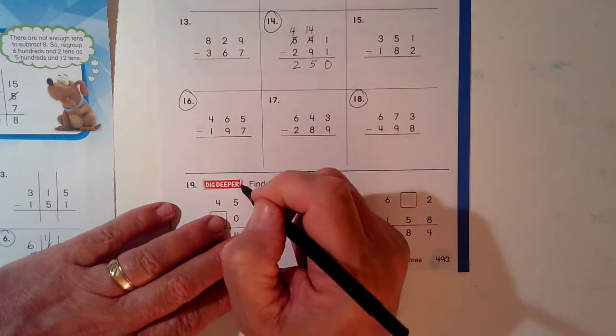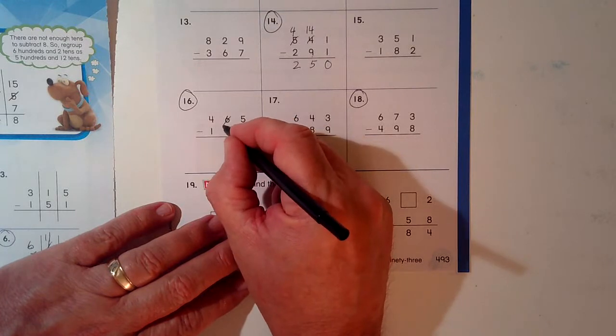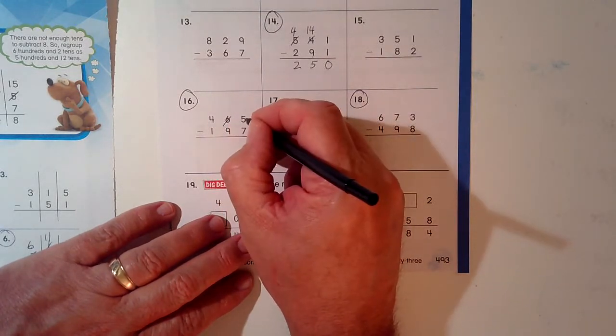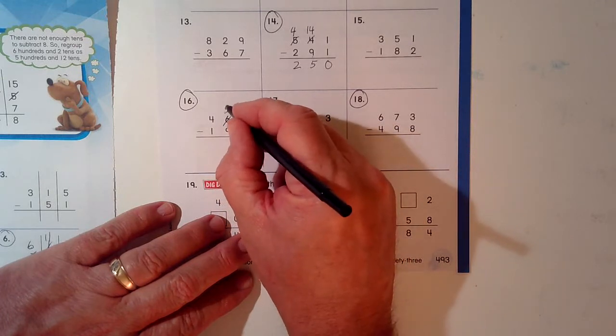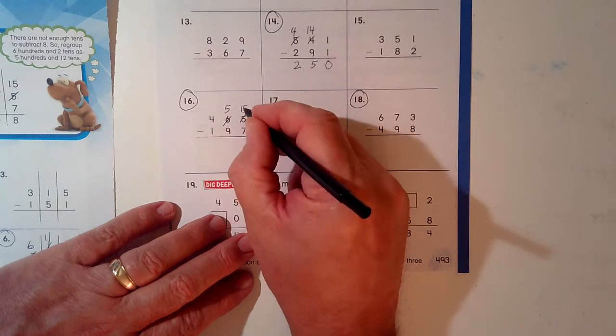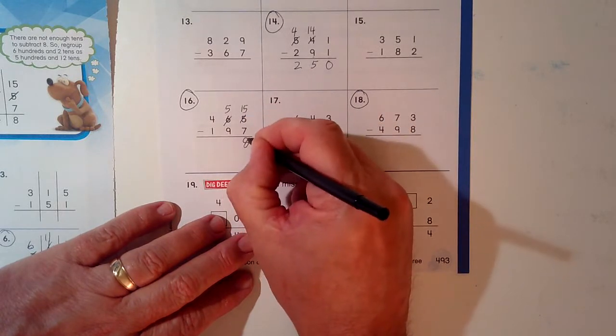Even problem. 5 minus 7, can I do that? Nope. Not big enough. So I take one of these sets of 10 and I break it up and put it in here. So I have 5 left over here. I don't have 5 here. Now I have 15. 15 minus 7 is 8.